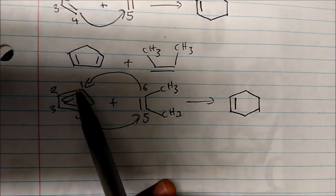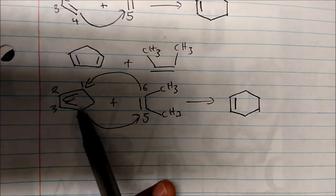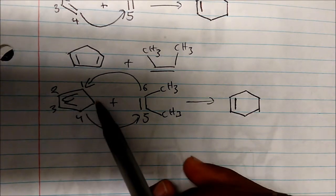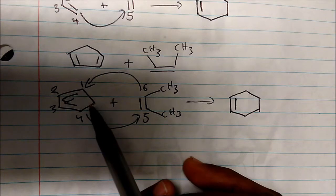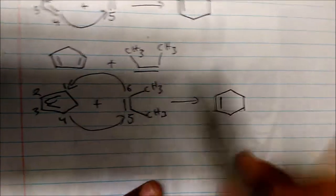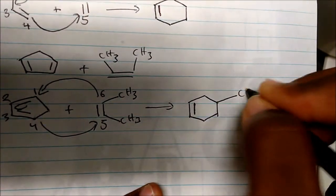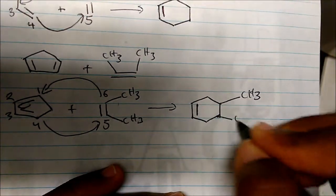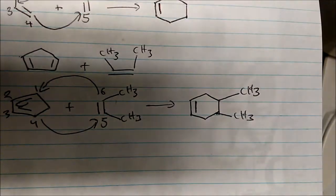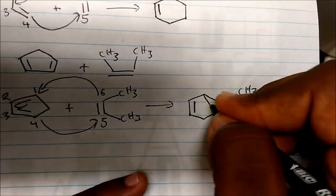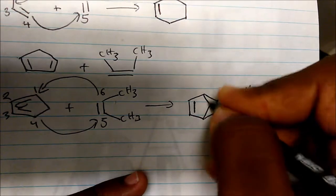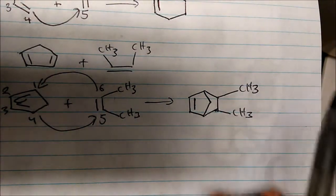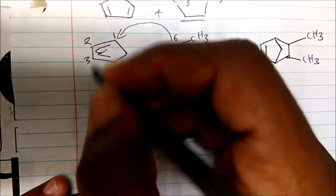Look at what's between carbons one and four — we have this branching of CH3. We also have this branching of CH2. So we get a CH3 on carbon five and a CH3 on carbon six, and then a branch between carbons one and four.